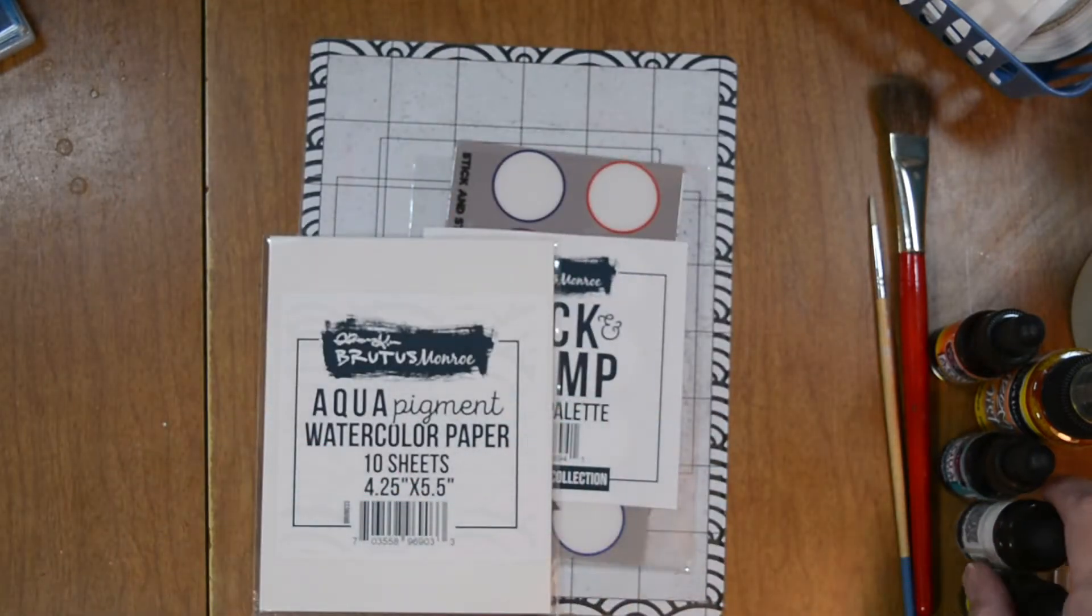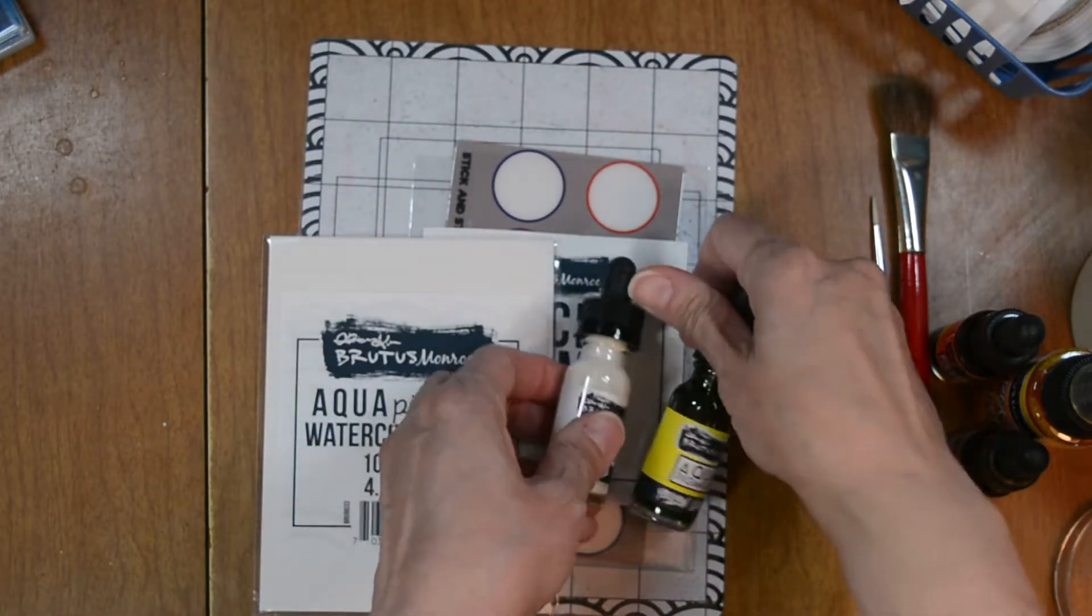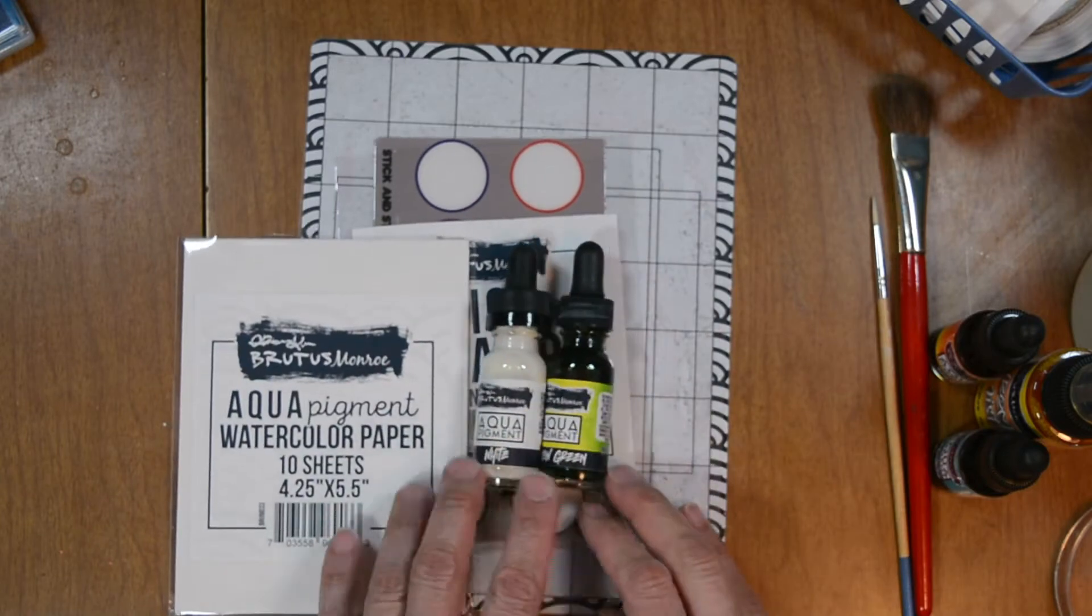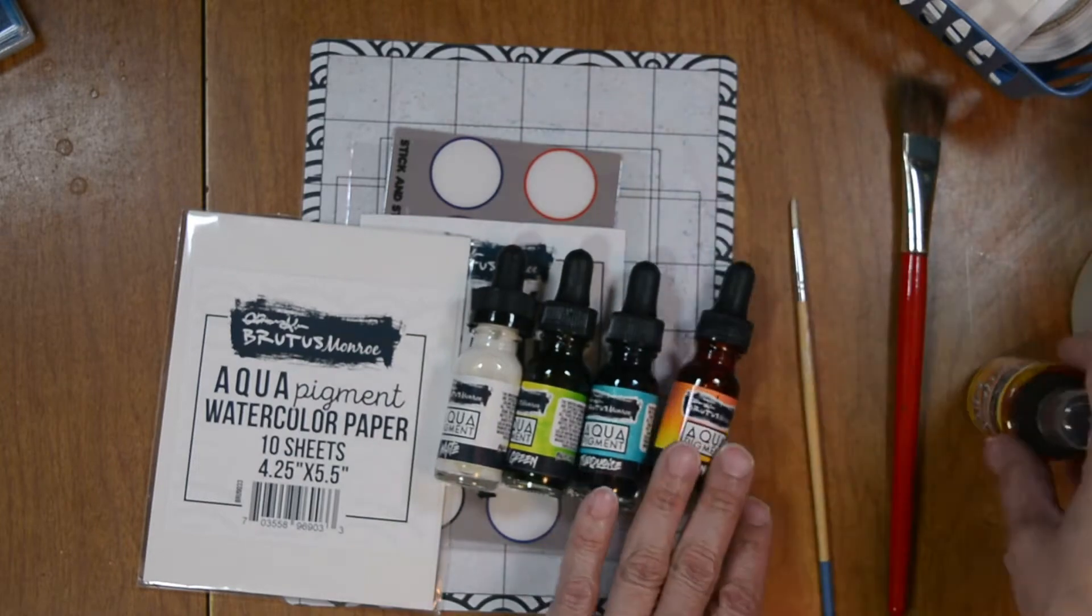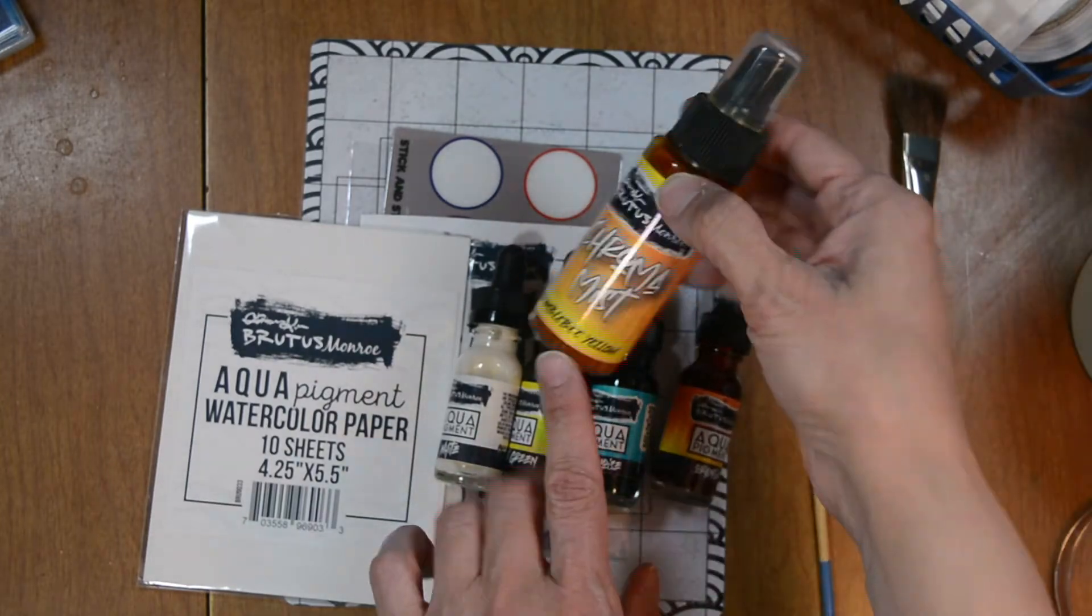We're going to use our aqua pigment watercolors. We're going to use white, yellow, green, turquoise, orange, and our chroma mist in bumblebee yellow.